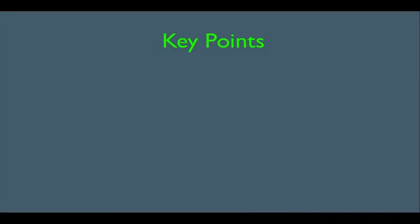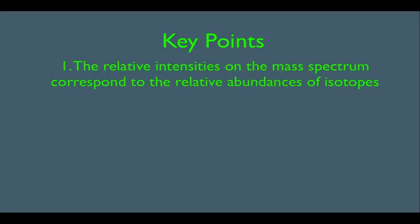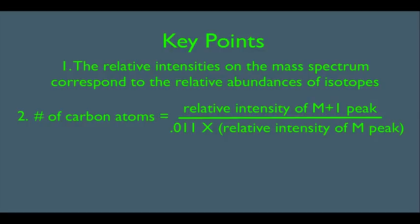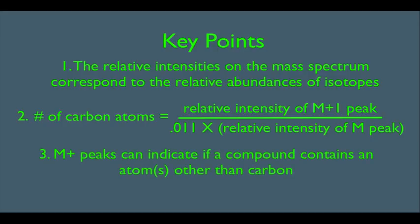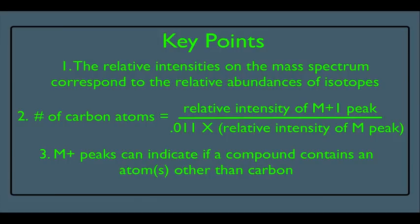In this online lecture, we're going to discuss the relative intensities of molecular ion peaks and how we can use them to figure out what might be present in our unknown molecule. We're going to see three things: first, that relative intensities on the mass spectrum correspond to the relative abundance of isotopes; second, a formula to calculate the number of carbon atoms; and third, that M-plus peaks can indicate if a compound contains atoms other than carbon.